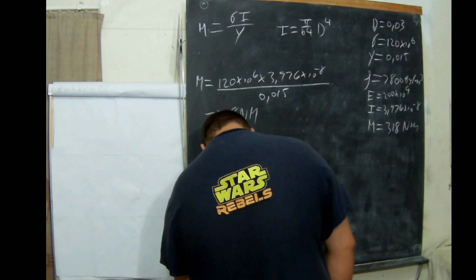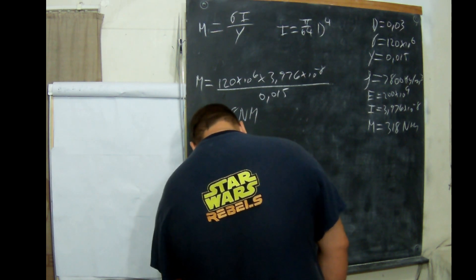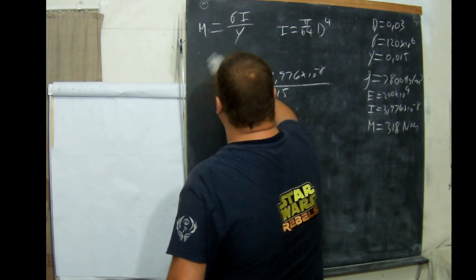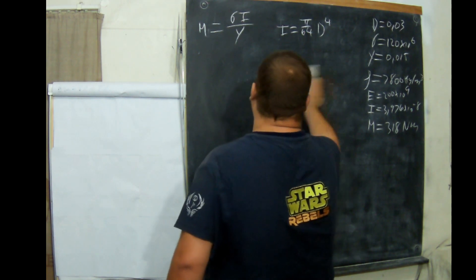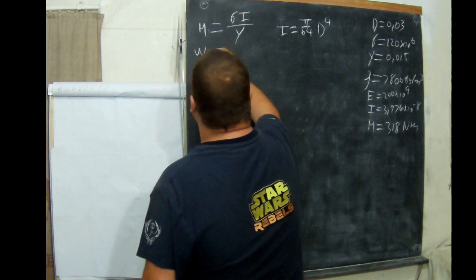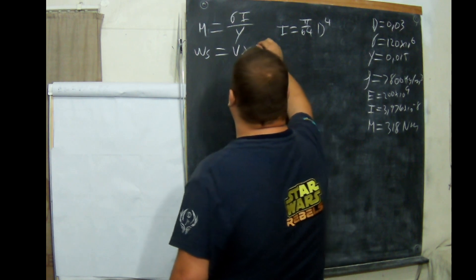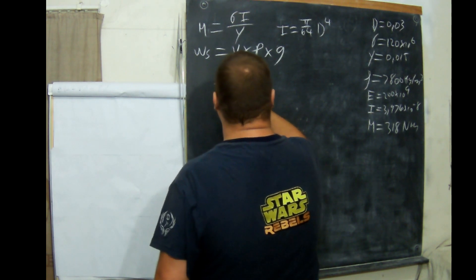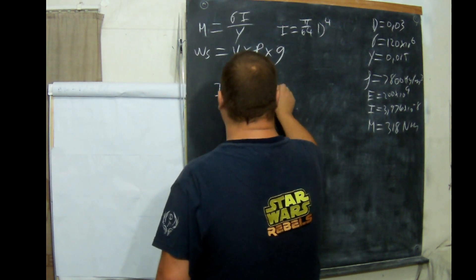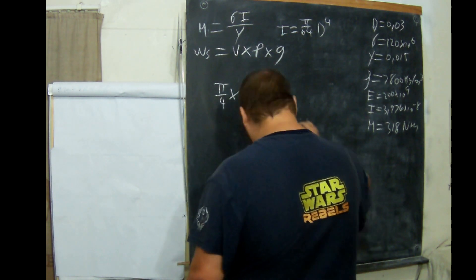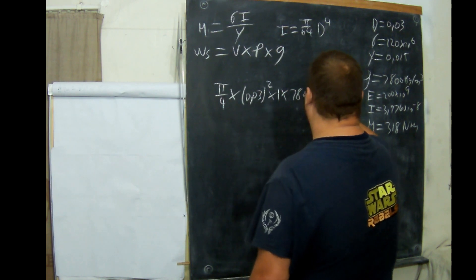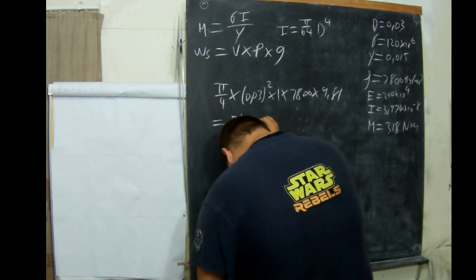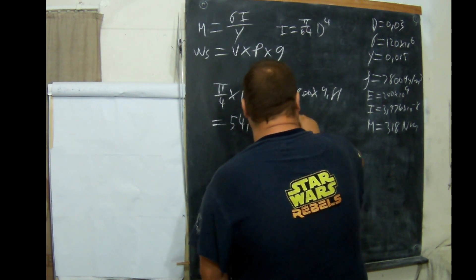The next part is we are going to work out the weight. Most of these formulas we've seen already. Weight of shaft is volume times density. So π over 4 times 0.03 squared times 1 because it's per meter, times 7,800 times 9.81, which will equal 54.087 Newton meters.